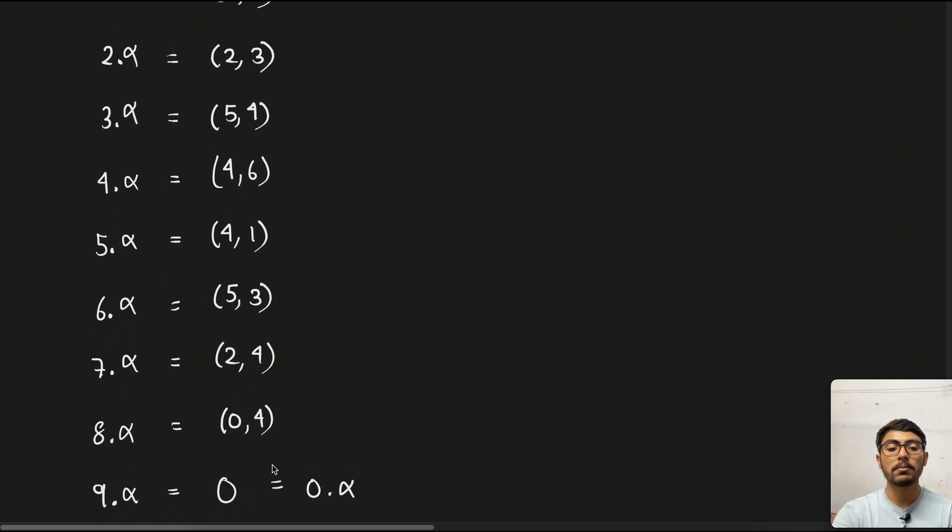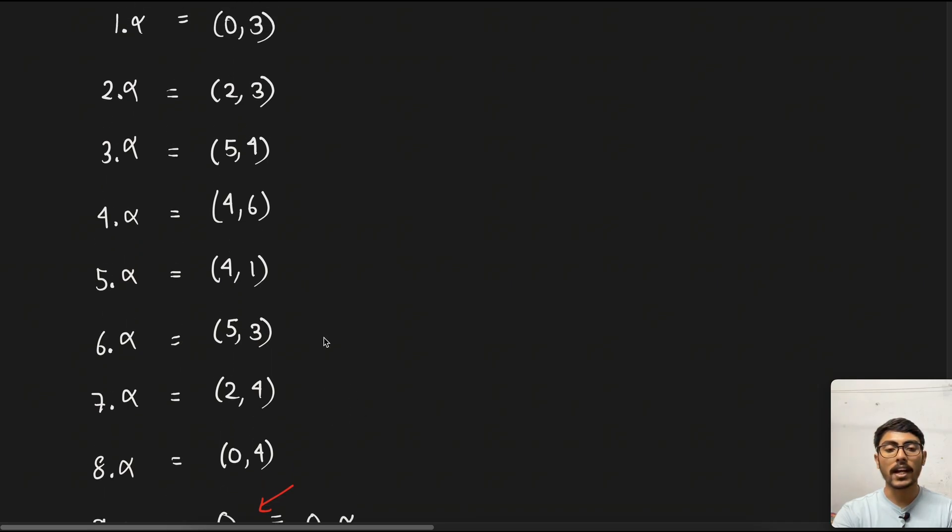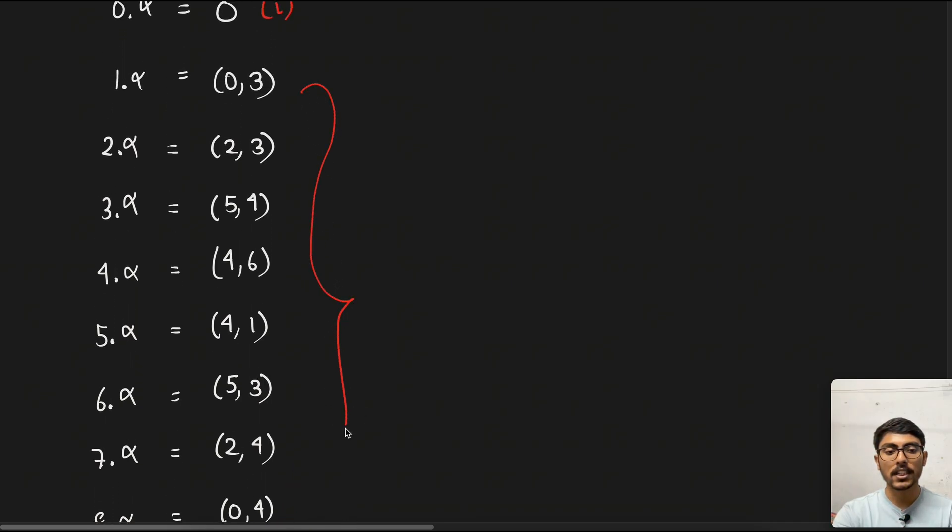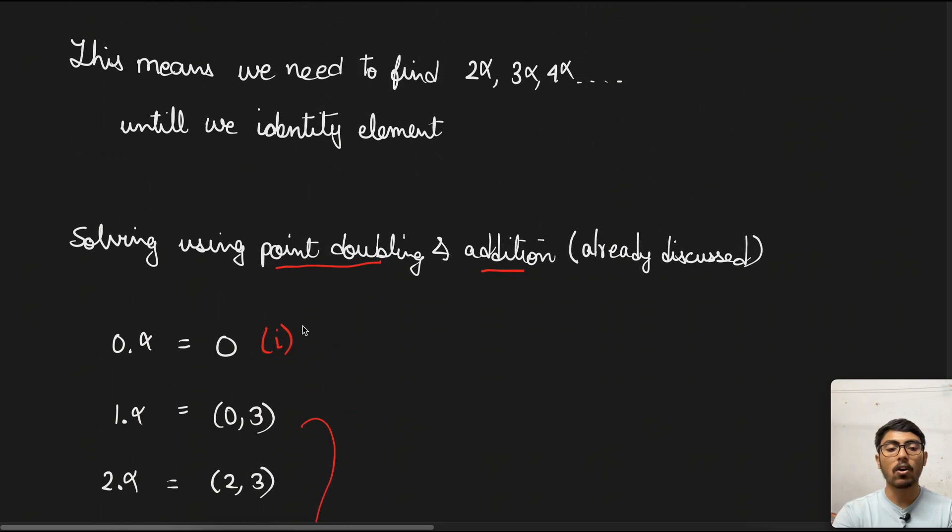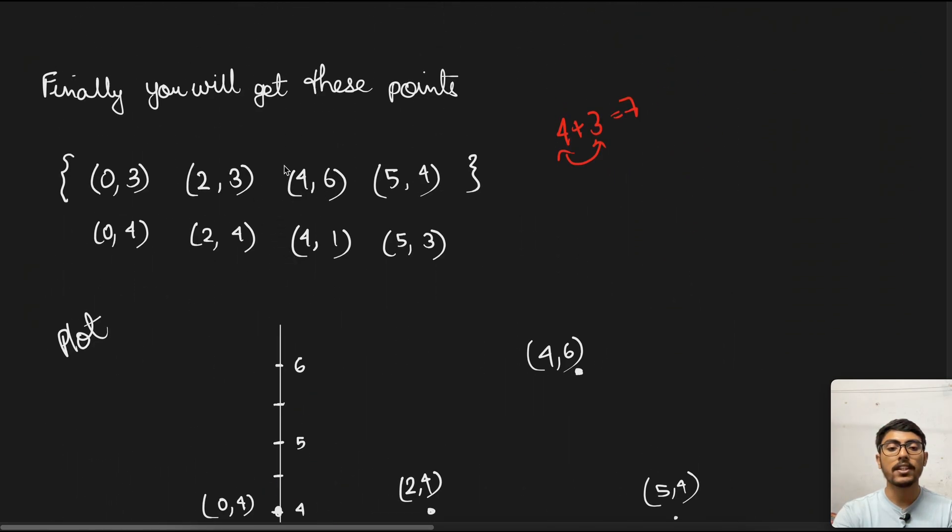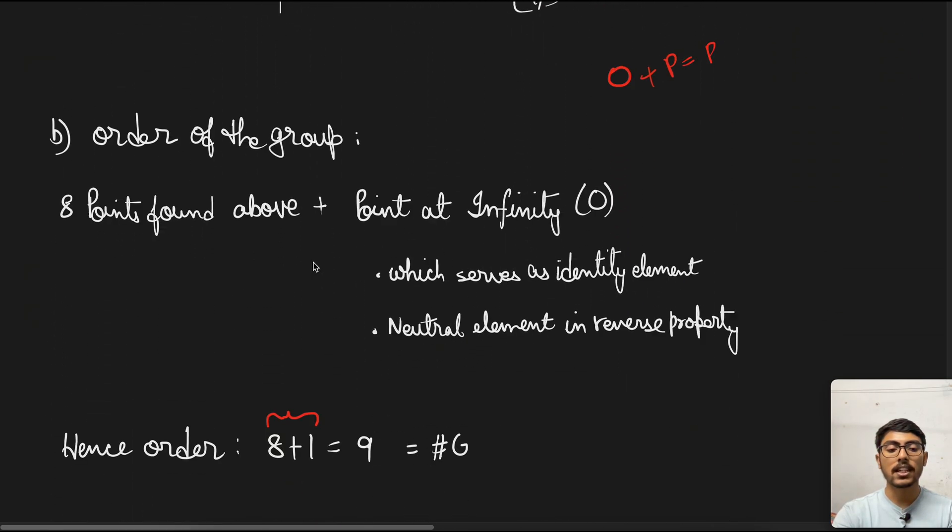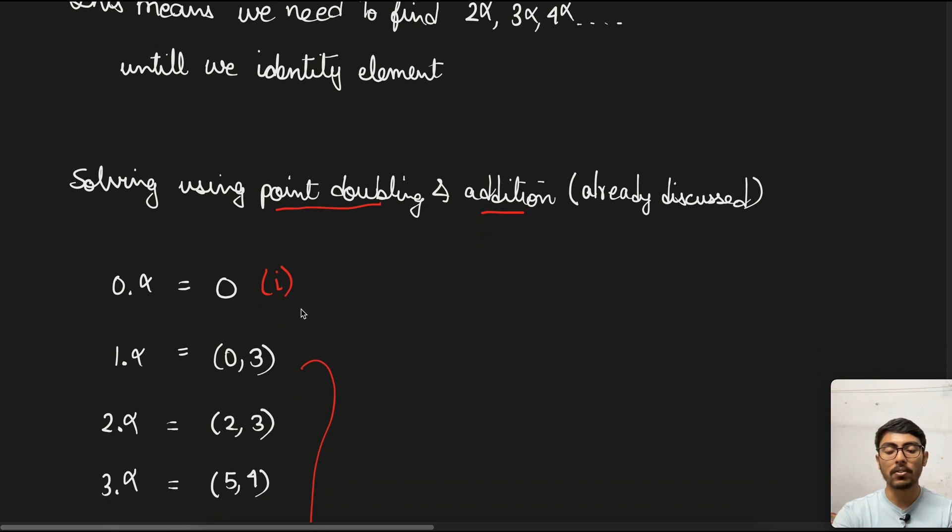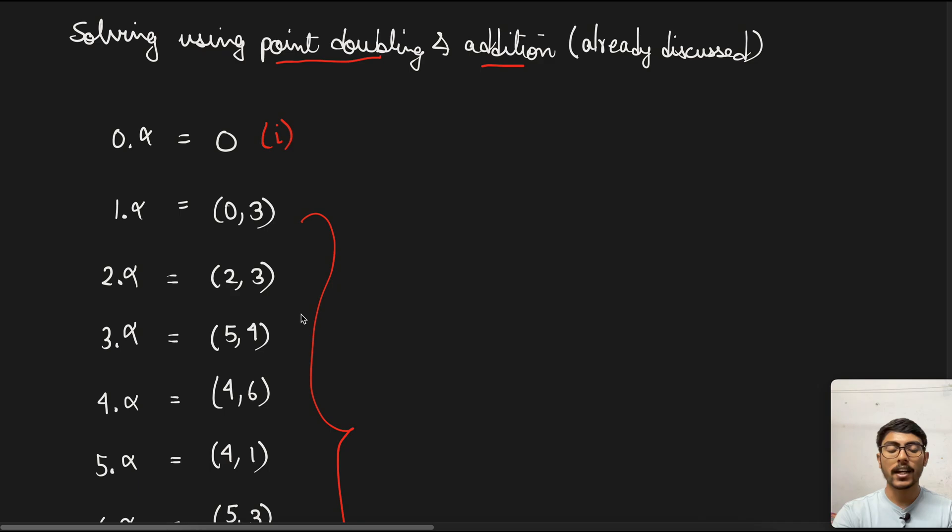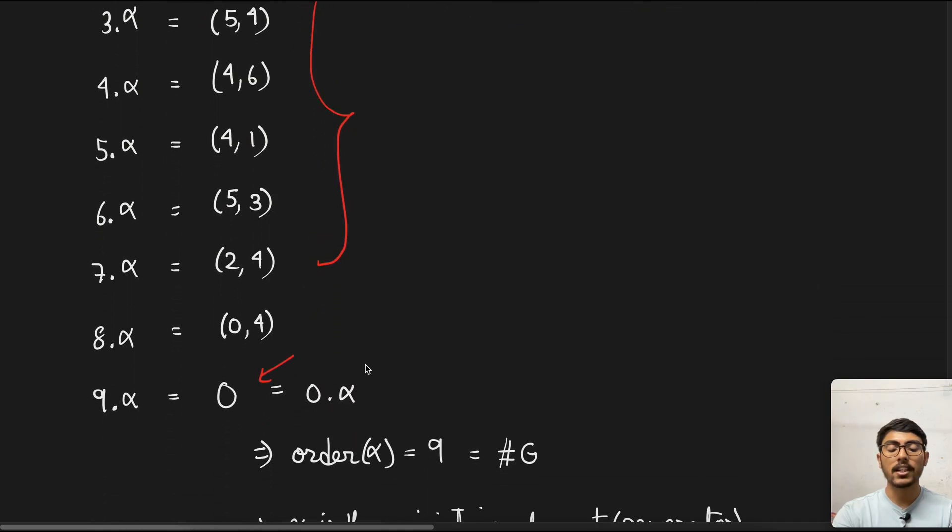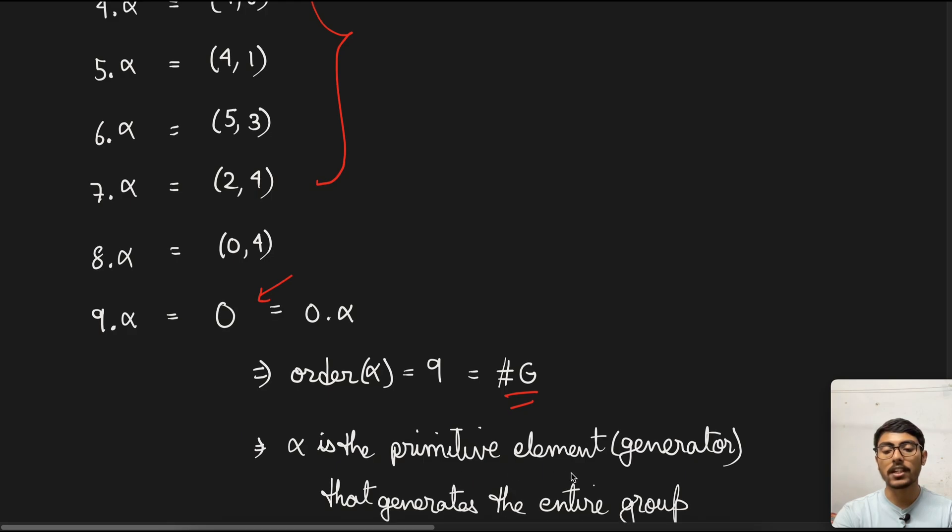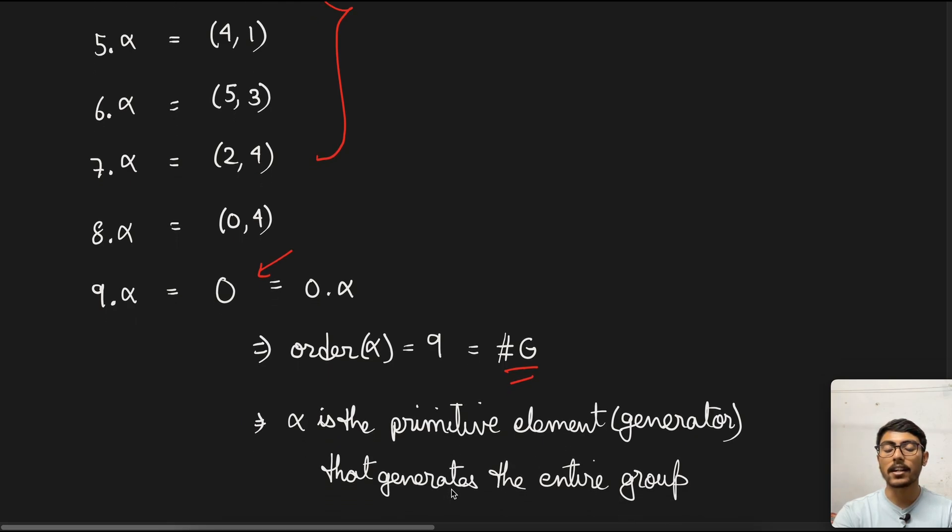Right? This no longer becomes a new element. This is the repetition that will form from this part, and if we check, all these points which we found here are already present in the points we discussed above. This means that alpha is a generator of the group. We can generate all the points in the ellipse using alpha. Hence, the order of the element is 9, which is the order of the group itself. Alpha is the primitive element or generator.